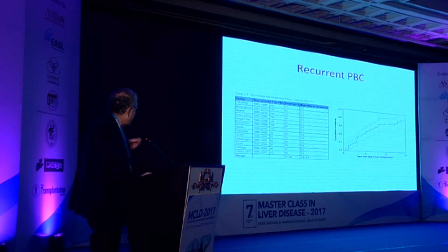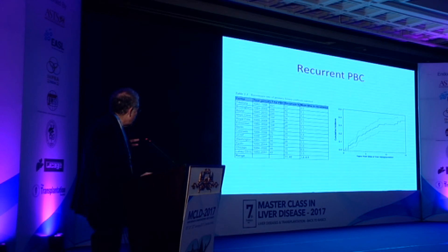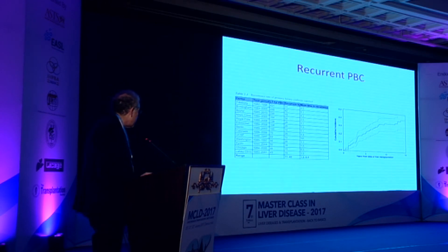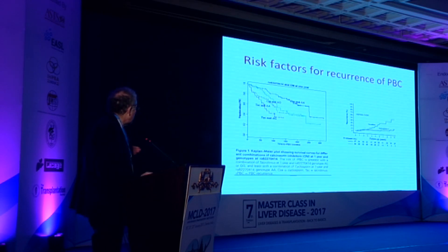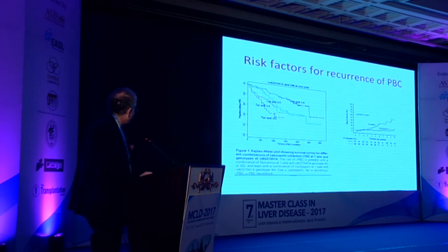For recurrent PBC — shown in Mayo Clinic data — it occurs in almost all series. The frequency depends in part on how much you look for it. It occurs at an increasing rate over time and is recognized up to 10 years post-transplant, but only just under half of patients get it. So why don't all patients get recurrent PBC? If you look for risk factors, immunosuppression seems to play a role — it's more likely to occur, and sooner, on tacrolimus than cyclosporine. Certain genotypes, including an IL-2R variant, suggest genetic factors may also play a role.